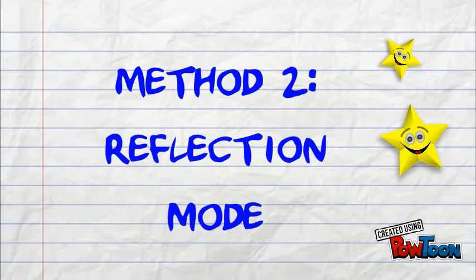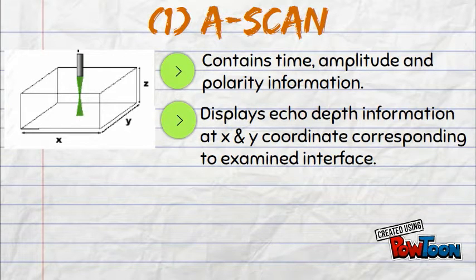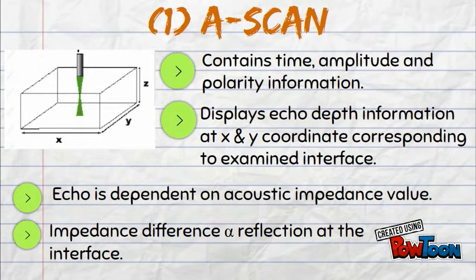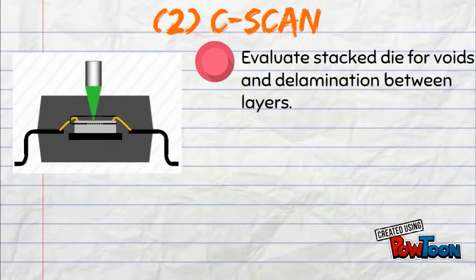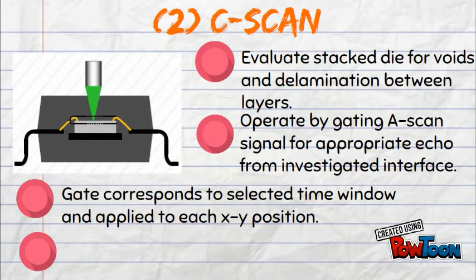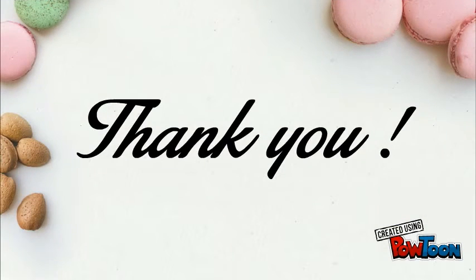AMI operates through A-scan or C-scan in reflection mode. A-scan displays echo depth information at X and Y coordinates corresponding to the examined interface, whereas C-scan evaluates stacked die for voids and delamination between layers and provides a clearer display of voids at edges due to high frequency. Thank you, we hope you enjoyed the video.